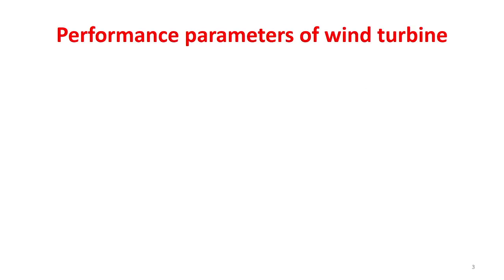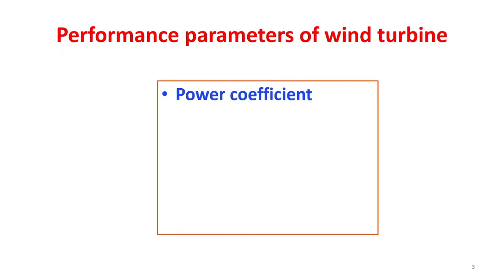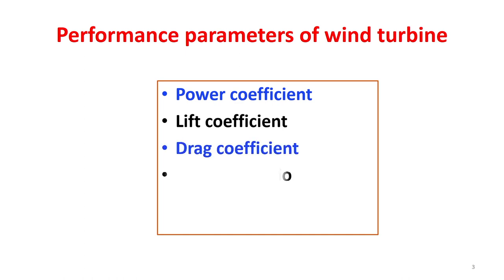Dear students, today we will be discussing about performance parameters of wind turbines and turbine blade geometry. We will first discuss performance parameters of wind turbines, which includes power coefficient, lift coefficient, drag coefficient, tip speed ratio and solidity. We will discuss one by one.